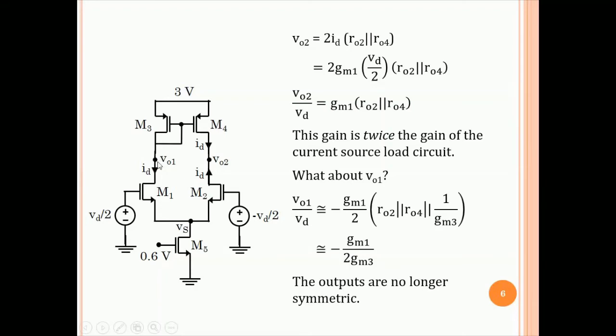So, I have written this as RO2 is the same as RO1, and this is RO3, and 1 by Gm3. Usually ROs are much greater than 1 by Gm3. So, we approximately write the gain as minus Gm1 by 2 Gm3. So, there is very little gain at VO1 from the inputs. This is a small quantity. This is, of course, a nice large quantity. So, this is one quality or characteristic of this circuit, that the output gains are different, and so, one cannot take the output differentially.